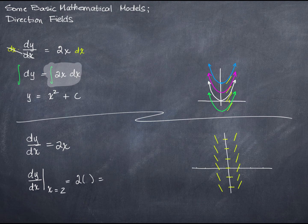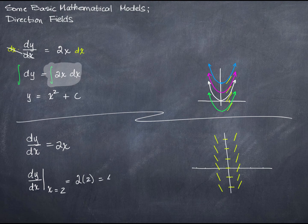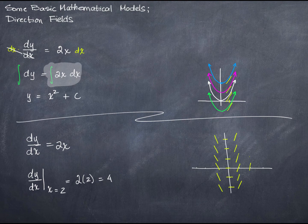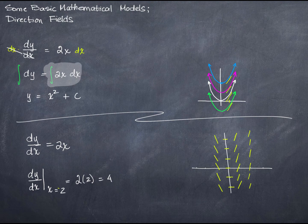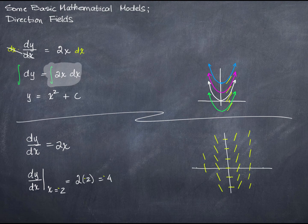When x equals 2, we get 2 times 2, which is 4. That's quite a steep slope. That's going to look something like this. And when x equals negative 2, we're just going to get negative 4. So we have something that looks like this.